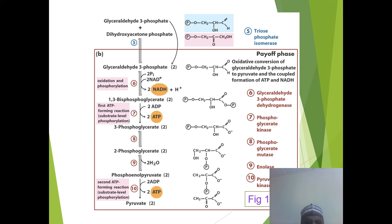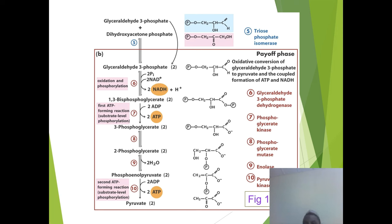We have 3-phosphoglycerate, which is converted into 2-phosphoglycerate, and then from 2-phosphoglycerate it is converted into phosphoenolpyruvate. Another 2 ADP enter and 2 ATP come out, and at the end we produce pyruvate.